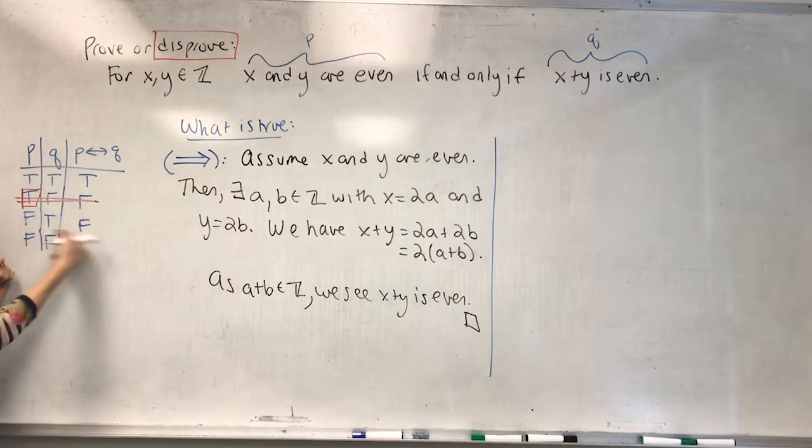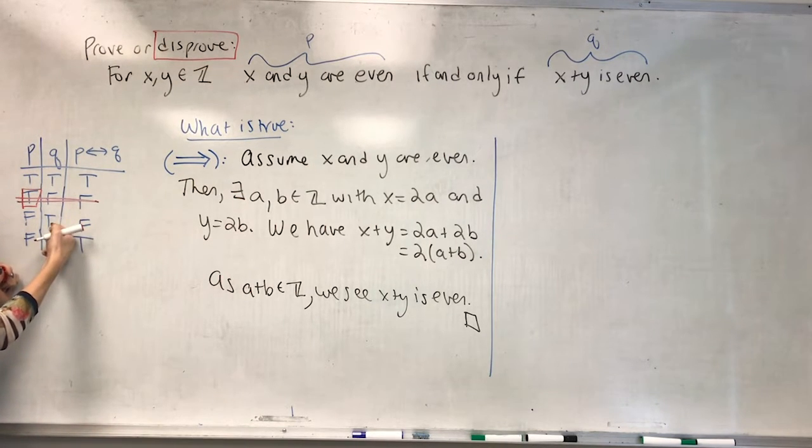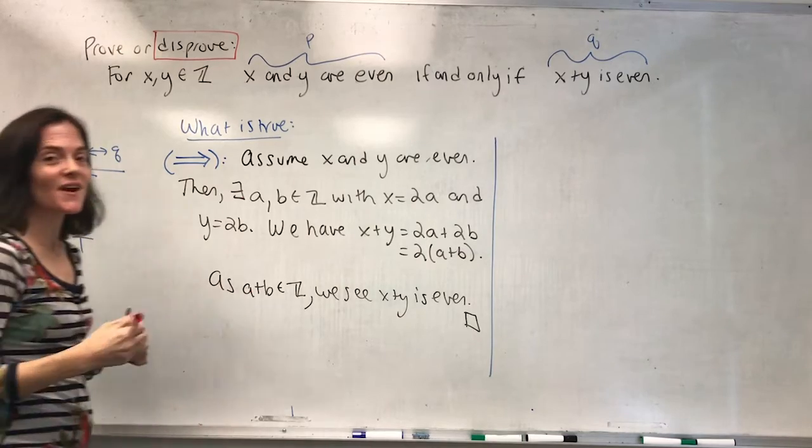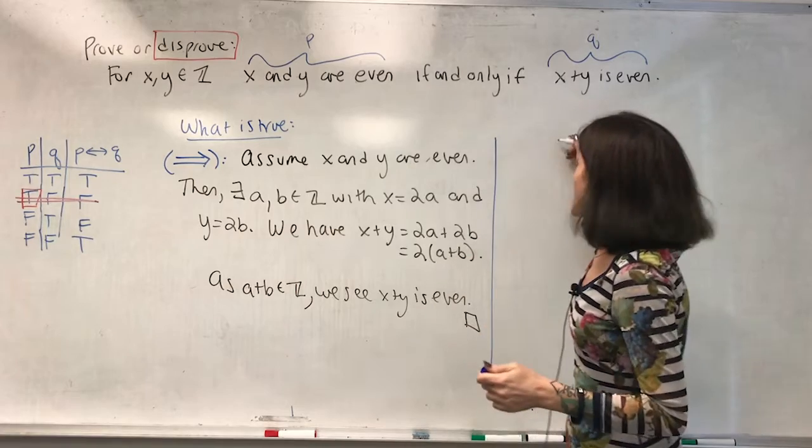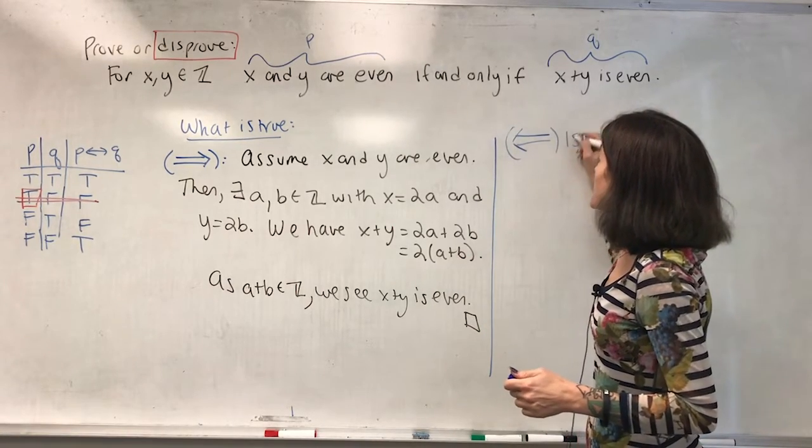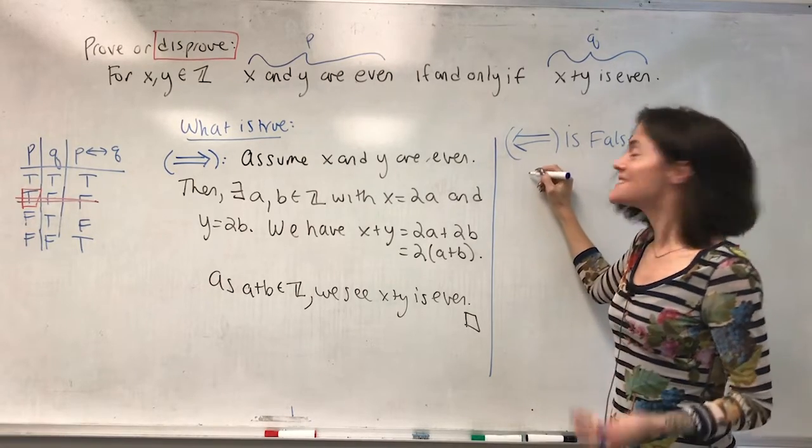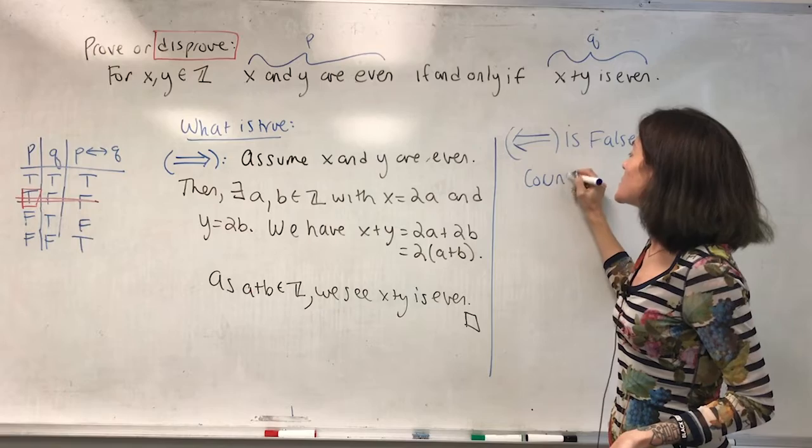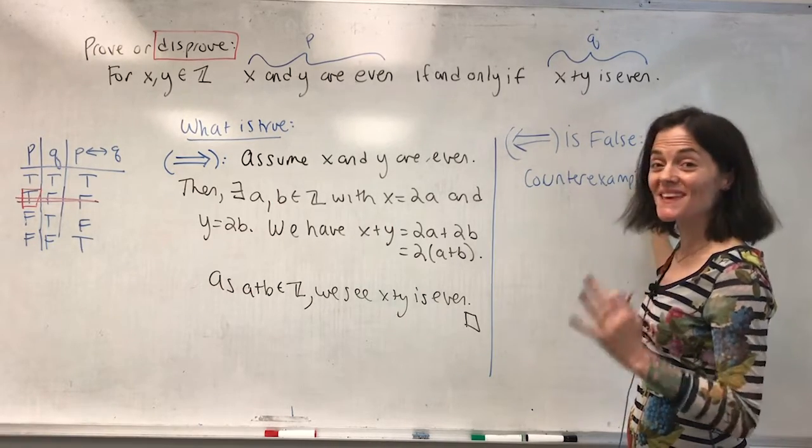Having a T and an F doesn't happen. But you see, there's another time the if and only if can be false. It's when q is true and p is false. This is where our counterexample will come in. Another way to think about it is that this direction is false. And why is it false? All you need to prove this is false is a counterexample with justification.